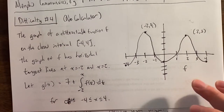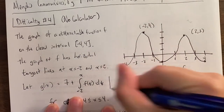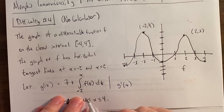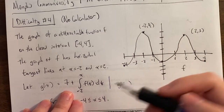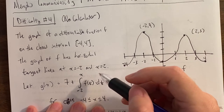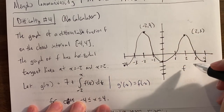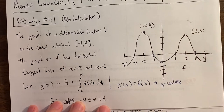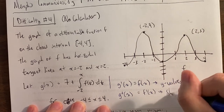Before looking at the graph and starting the questions, I like to write this setup first. In this variant, I write g prime already. So g prime of x, by the fundamental theorem of calculus — there's a 7 sitting here, but the derivative of 7 is zero, so it goes away. By the fundamental theorem of calculus, when you take a derivative of a function expressed as an integral, the integral and derivative cancel, leaving you with f of x.